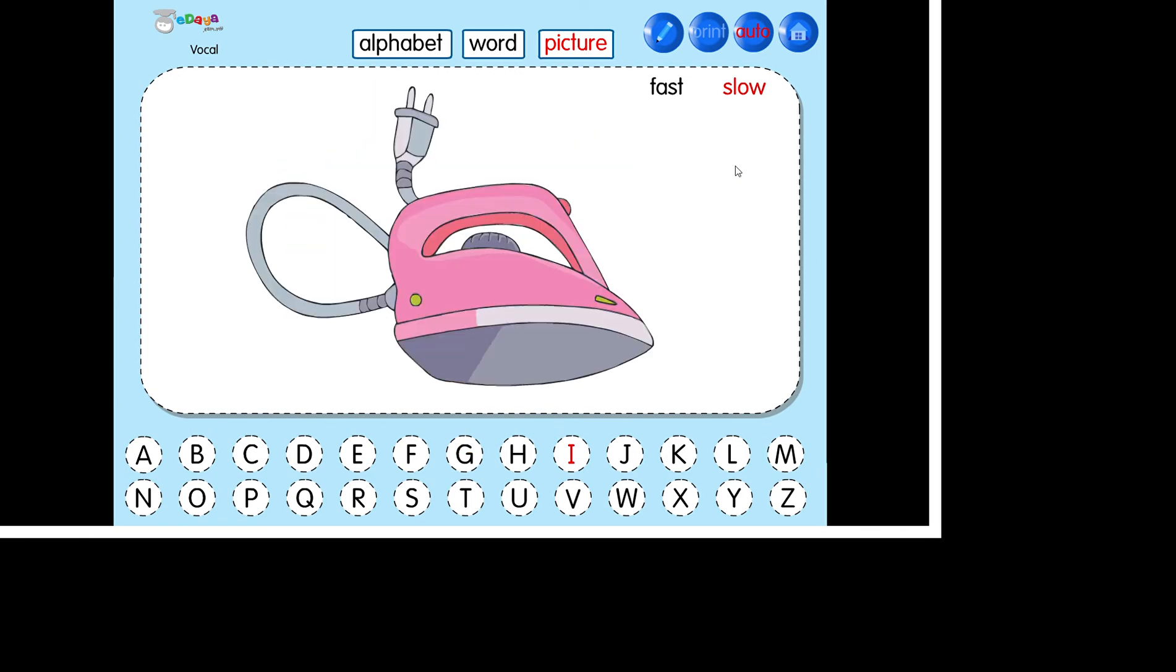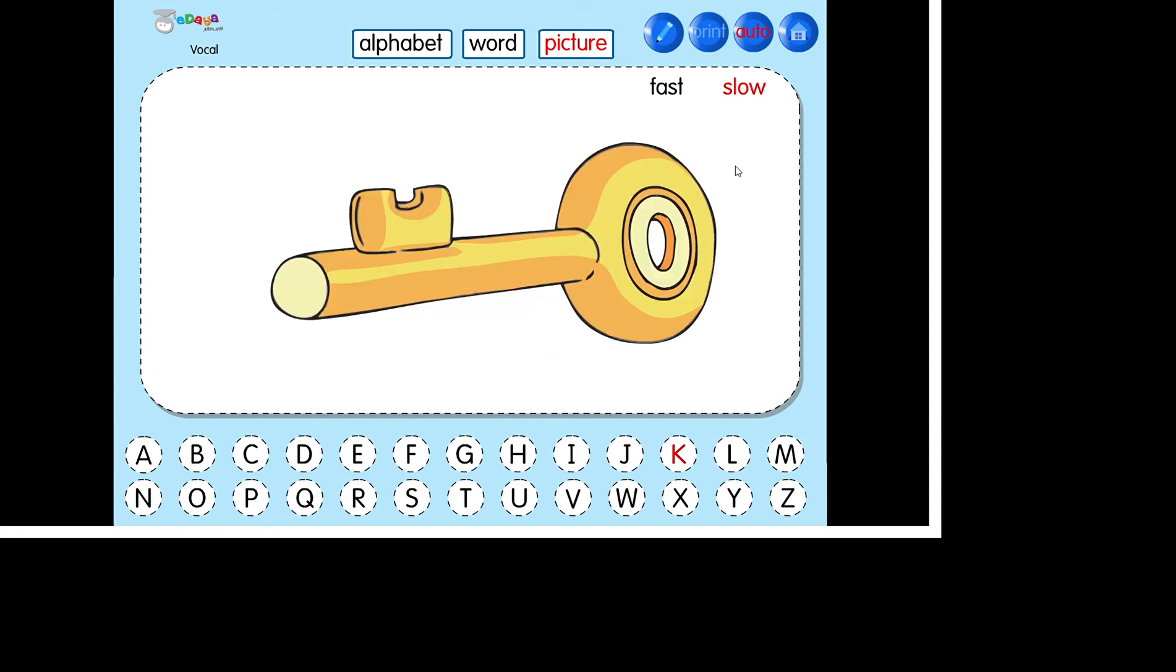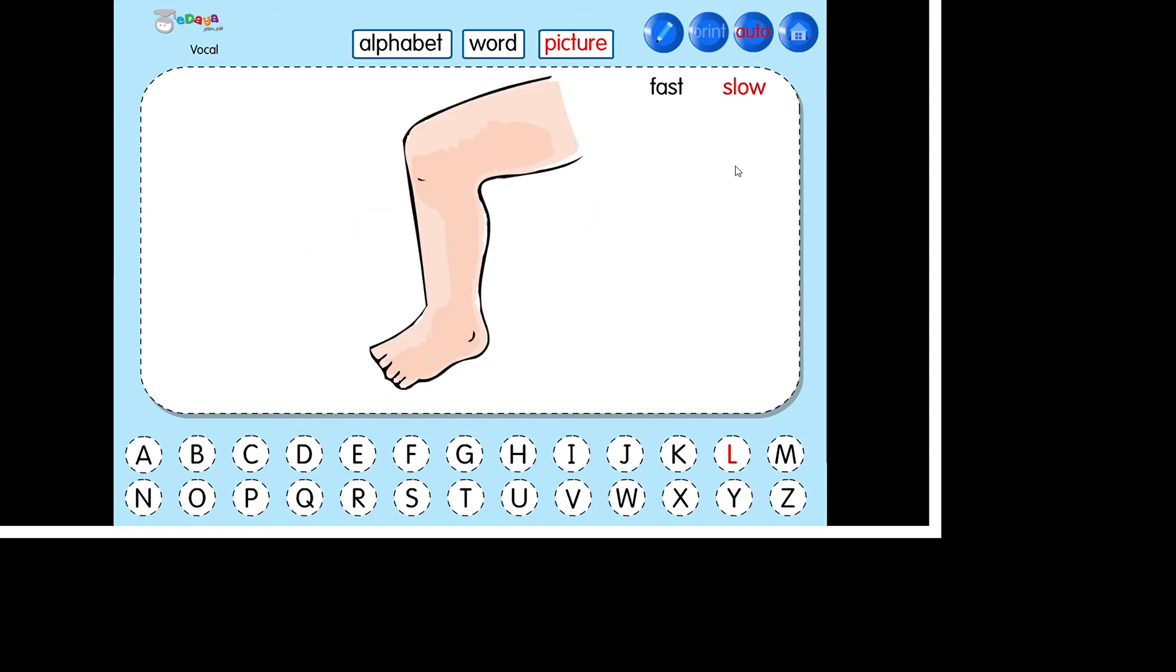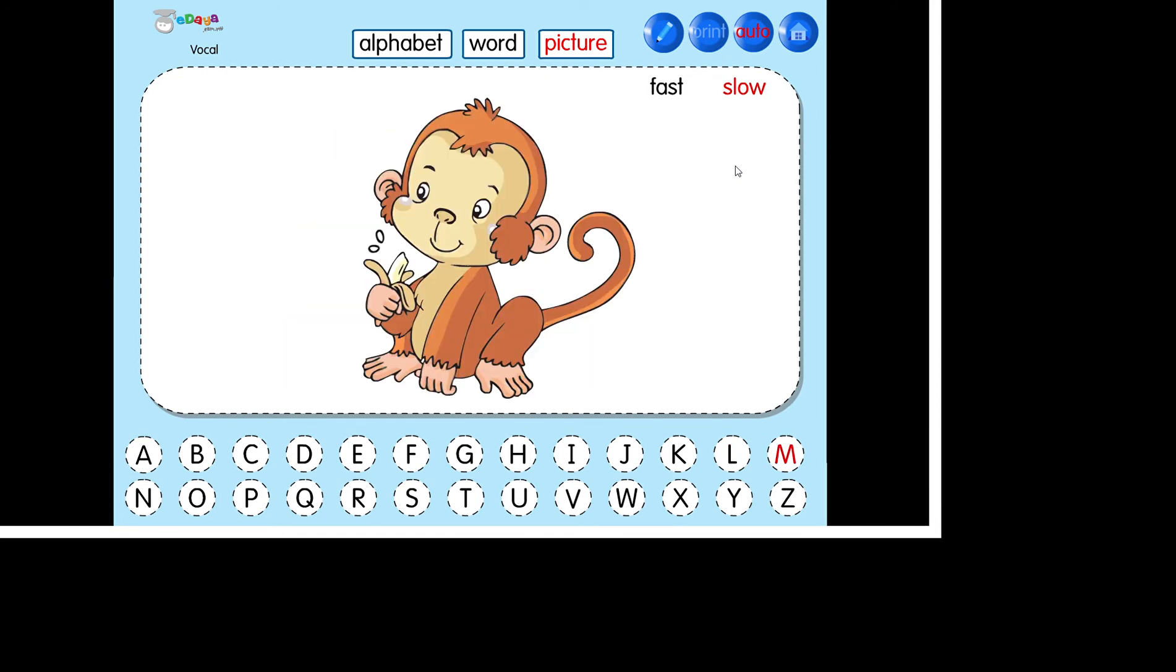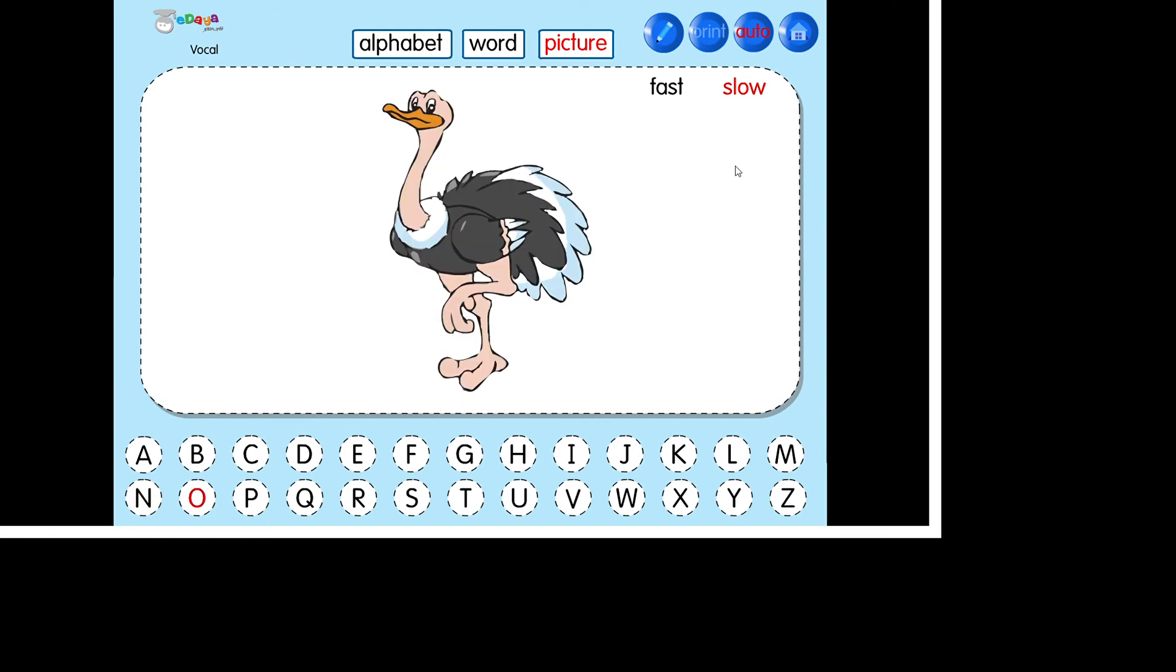Island. Iron. Jam. Jelly. Key. King. Leg. Lion. Mango. Monkey. Nose. Nose. Nose. Nose. Owl. Ostrich. Pot.